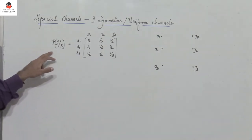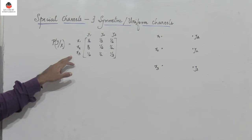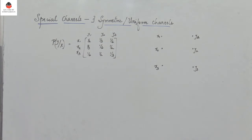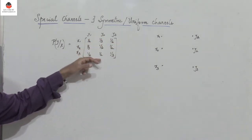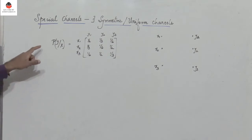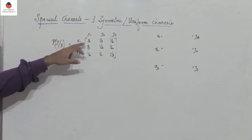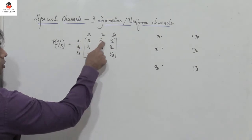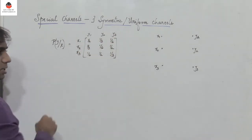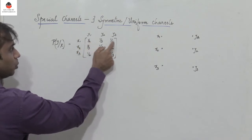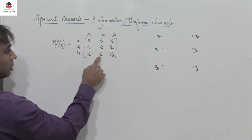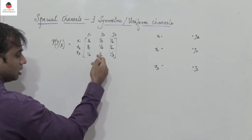Consider P of y given x with three input symbols and three output symbols y1, y2, y3. A channel is said to be symmetric or uniform if the elements of each row keep repeating but are in different order. In the first row, P of y1 given x1 is 1/2, P of y2 given x1 is 1/3, and P of y3 given x1 is 1/6. In the second row we have the same elements but in different order, and the same continues in the third row.